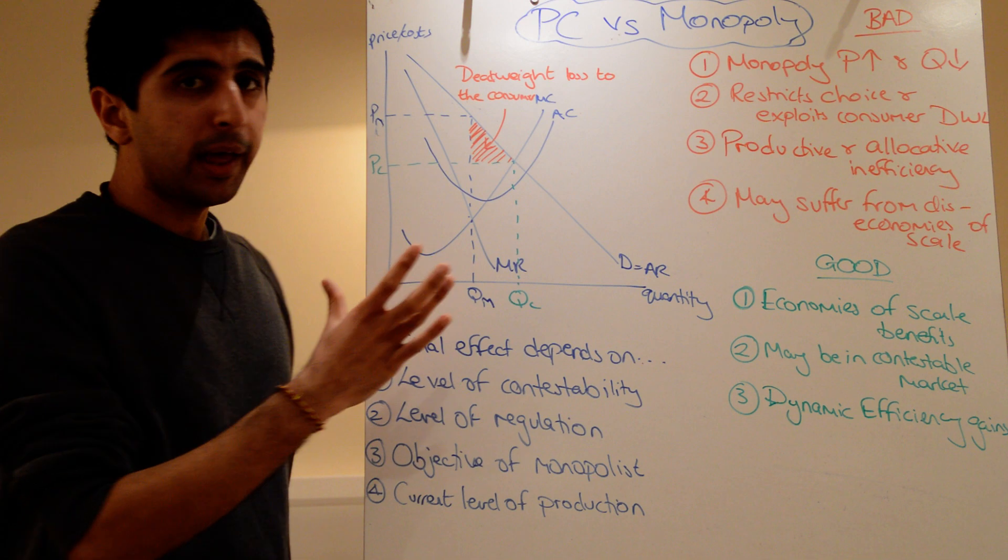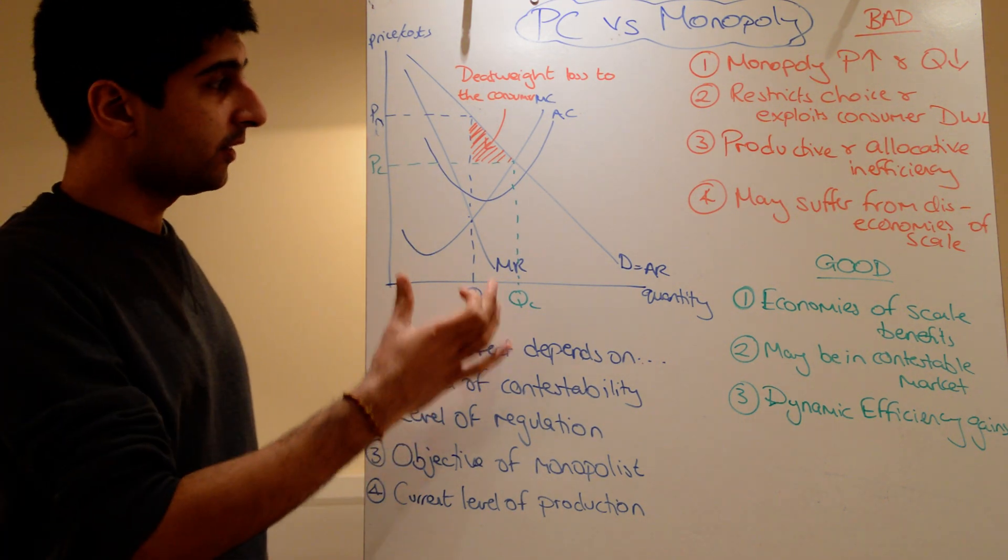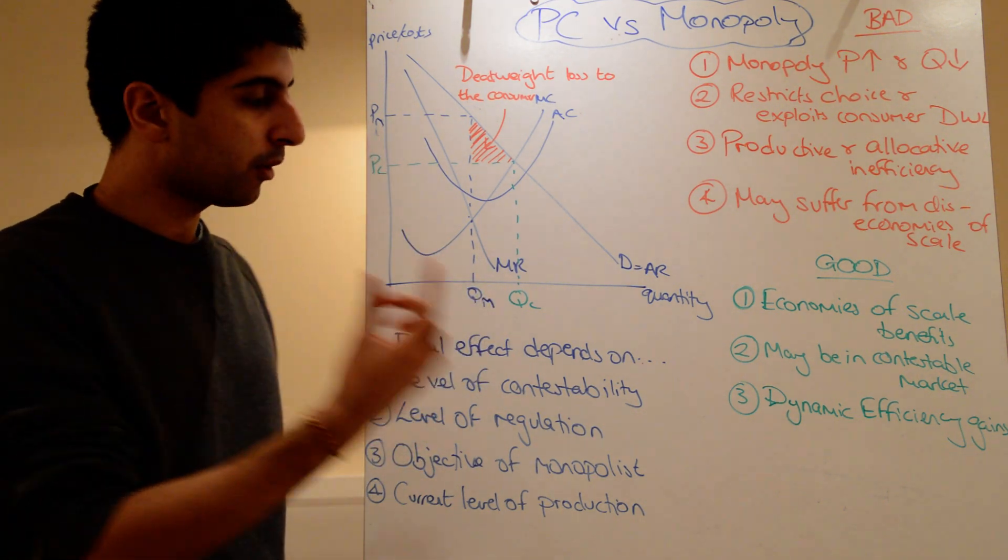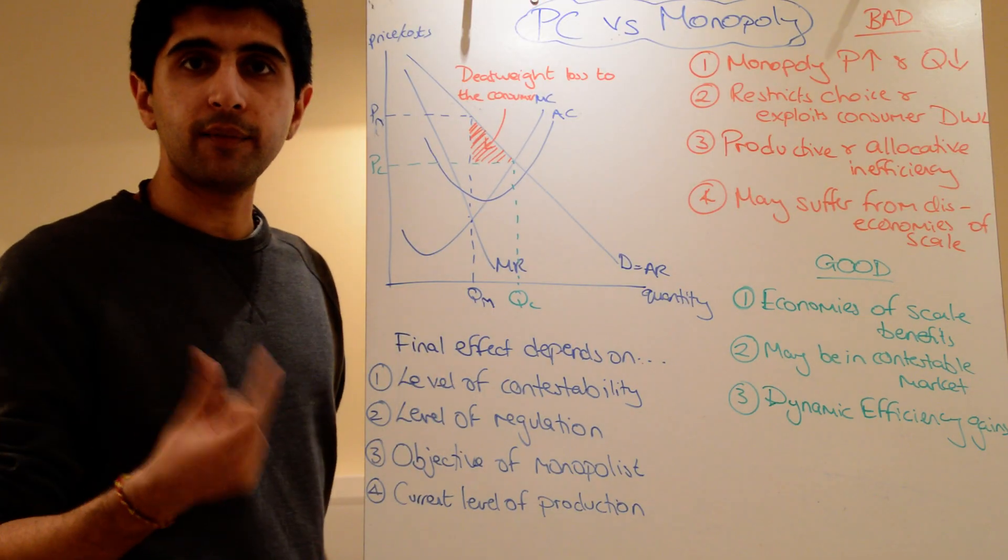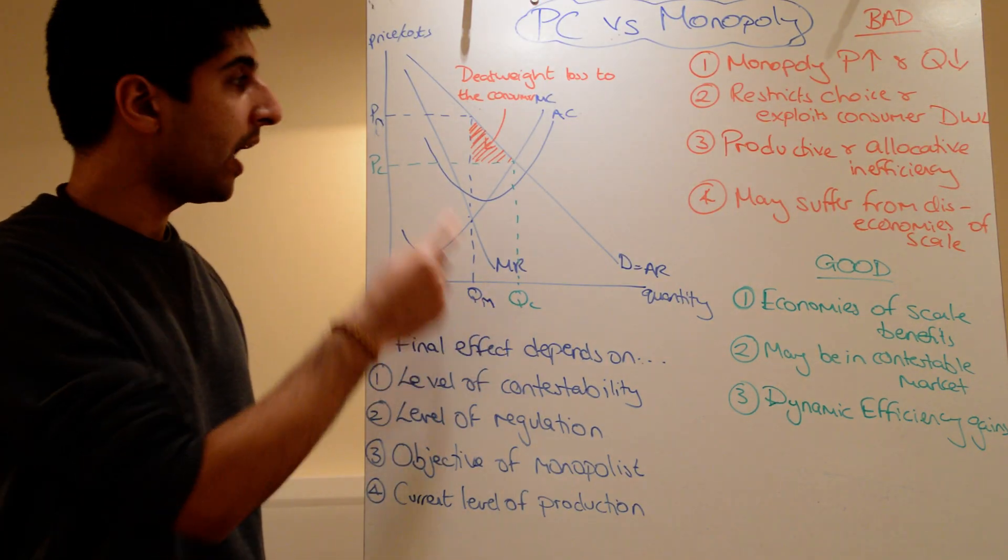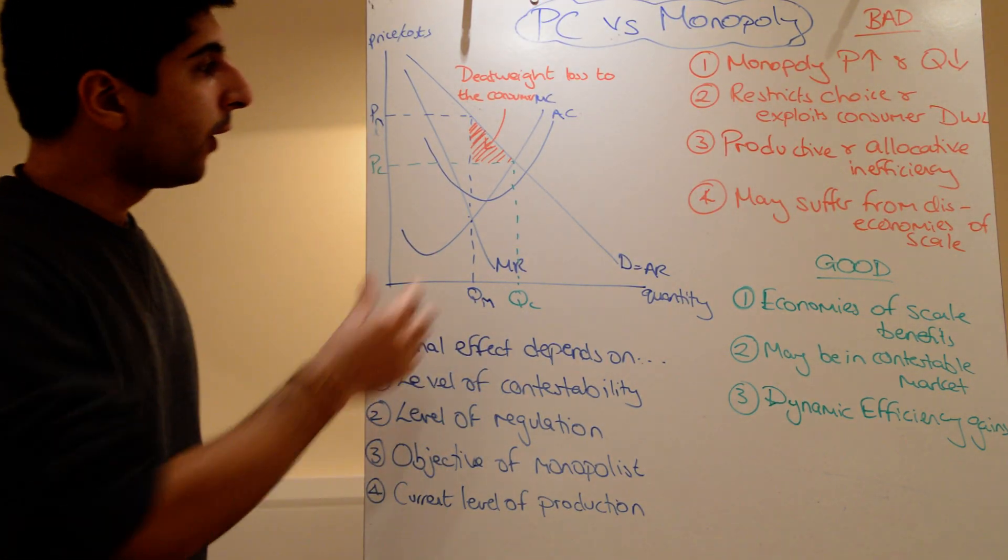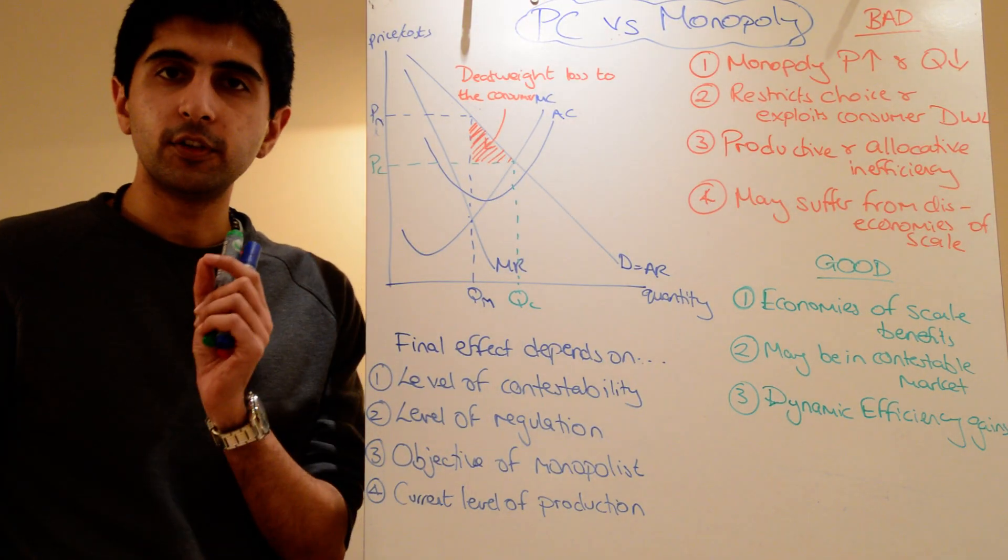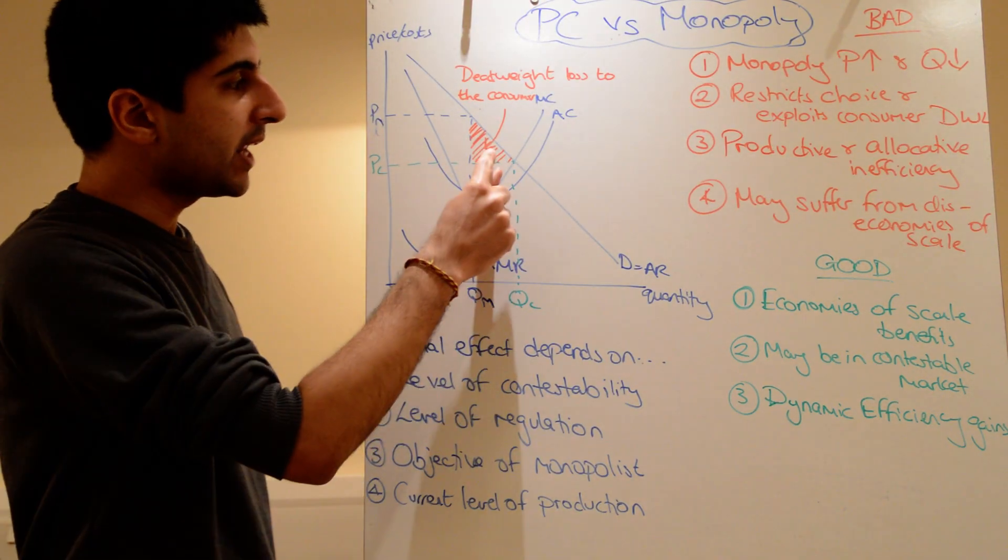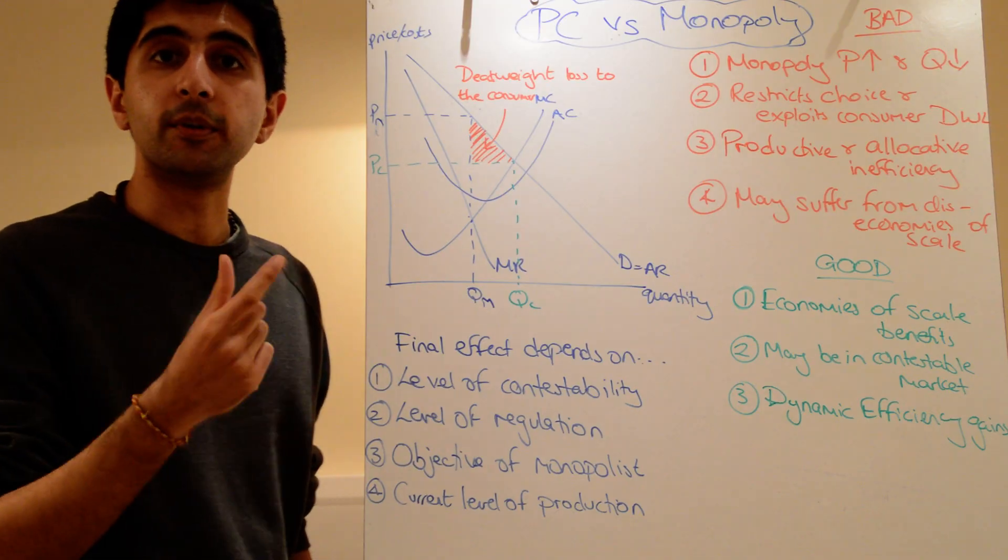And if you compare, it's pretty obvious to see that monopolist charges a higher price and produces at a lower level of quantity, restricting choice, exploiting consumers. Well, we can show just how much consumers are exploited by shading in this red triangle of consumer surplus loss.